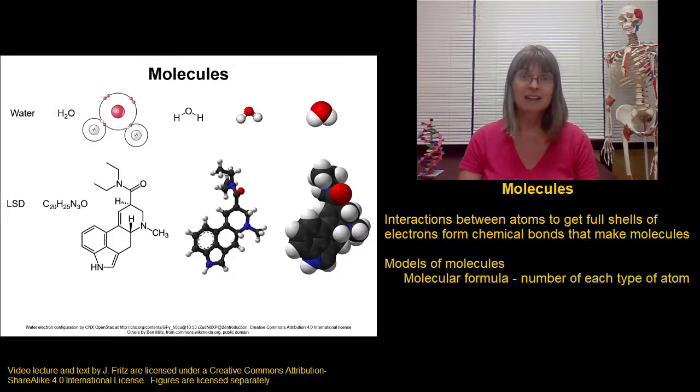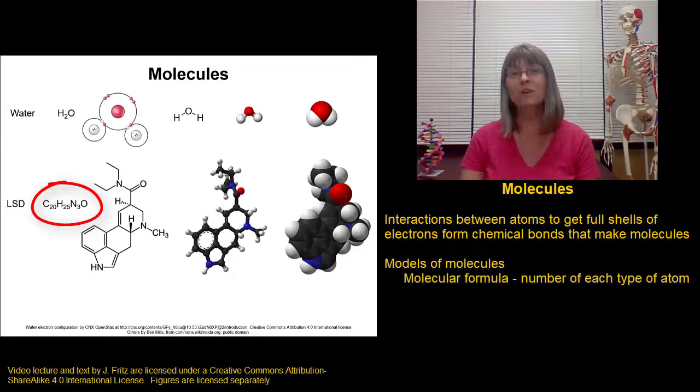Something more complicated, like LSD, has a molecular formula of C20H25N3O. What that tells us is that we have 20 carbon atoms, 25 hydrogen atoms, 3 nitrogen atoms, and an oxygen.